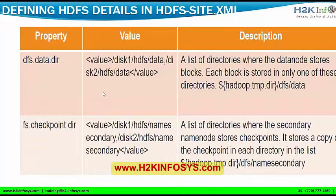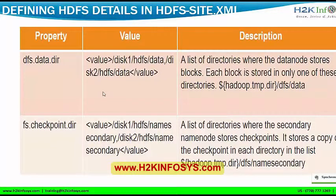For defining HDFS details in hdfs-site.xml, the first important property is dfs.data.dir. In a typical cluster, to maintain a RAID-like property, you copy name node data to two or three different directories — for example, disk one HDFS data and disk two HDFS data — manually creating replication for those values. This is a list of directories where data nodes store blocks; each block is stored in only one of these directories, but storing in multiple places is also possible.